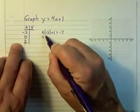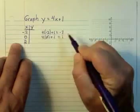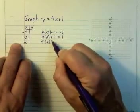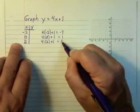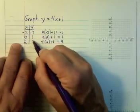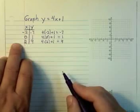If my input is 0, 4 times 0 plus 1 equals 1. If my input is 2, 4 times 2 plus 1 equals 8 plus 1, or 9.